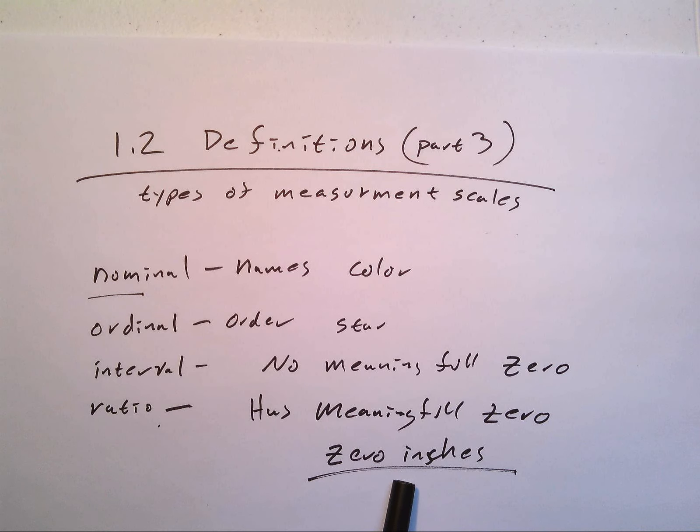With an interval and with the ratio, you're allowed to double it or triple it, and then it really means it's three times the size or two times the size. The problem with interval is that there's no meaningful zero.